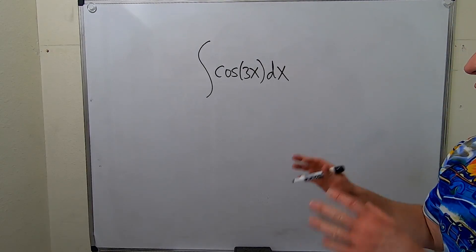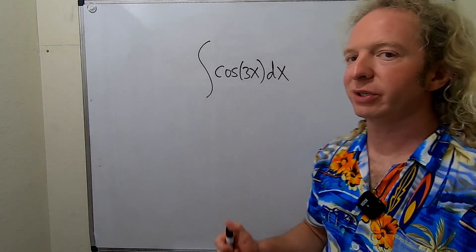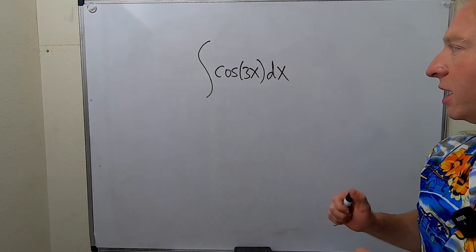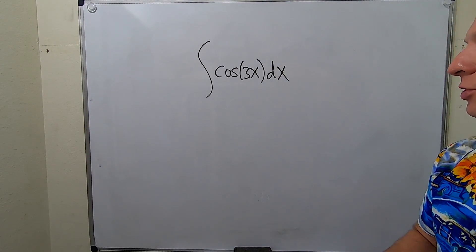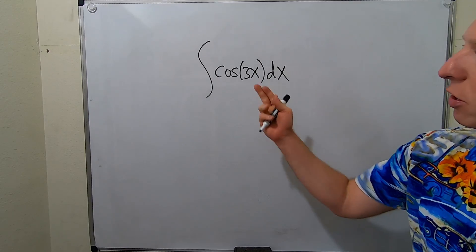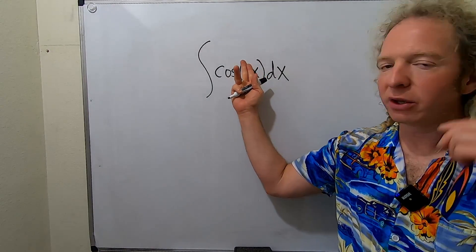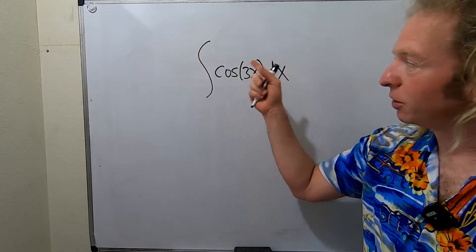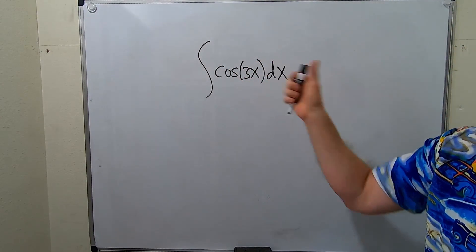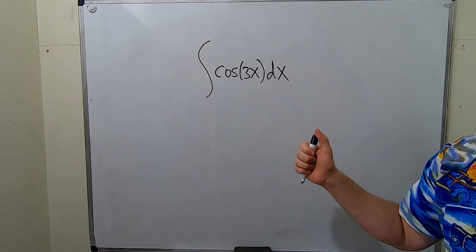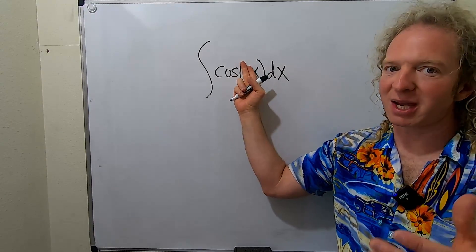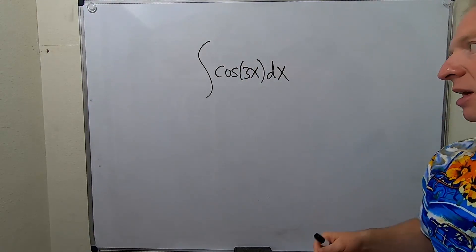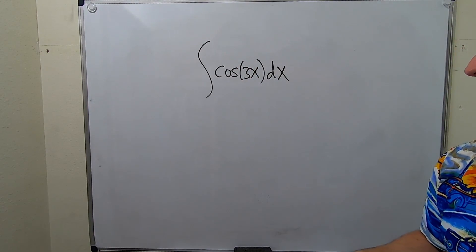In this video, we're going to work out this integral. We're going to make a u substitution. So if it was just cosine x, you could think backwards and do it. You can probably still think backwards and do it in this case, but whenever it's cosine of something besides x, you typically want to make a u substitution.